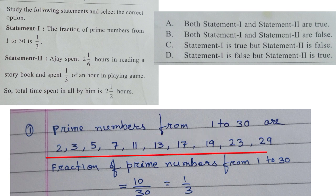These are 2, 3, 5, 7, 11, 13, 17, 19, 23, and 29. So total number of prime numbers from 1 to 30 equals 10.